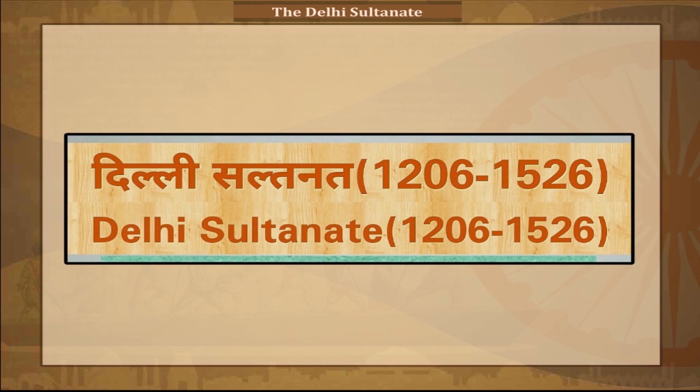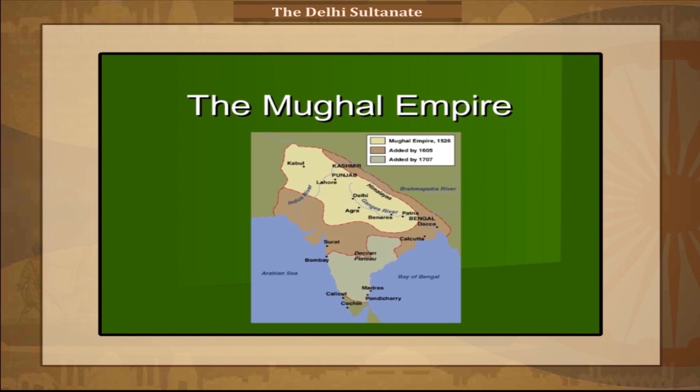In 1526, the Delhi Sultanate was absorbed by the emerging Mughal Empire.